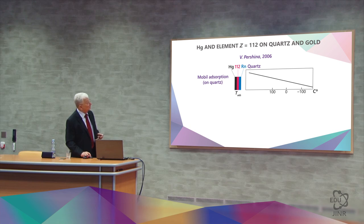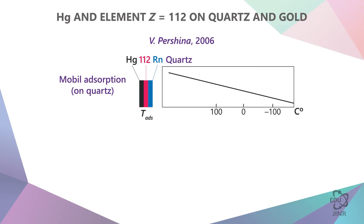In what sense do they not repeat the pattern? There are three different atoms: radon, mercury and element 112. And there is a surface that is not covered with gold, but rather another element, such as quartz. The temperature ranges from plus 100 degrees Celsius to minus 100 degrees Celsius. We send the atoms along the detector, as well as this temperature gradient, and we see the following.